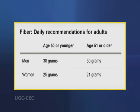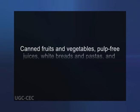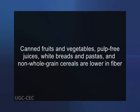The Institute of Medicine, which provides science-based advice on matters of medicine and health, gives the following daily fiber recommendations for adults. Refined or processed foods such as canned fruits and vegetables, pulp-free juices, white breads and pastas and non-whole grain cereals are lower in fiber. The grain refining process removes the outer coat from the grain, which lowers its fiber content. Enriched foods have some of the B vitamins and iron added back after processing, but not the fiber.